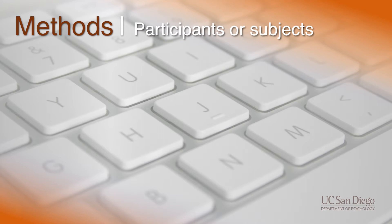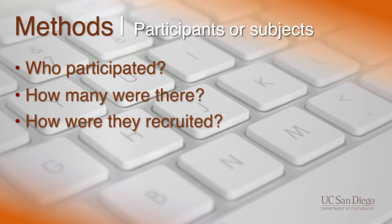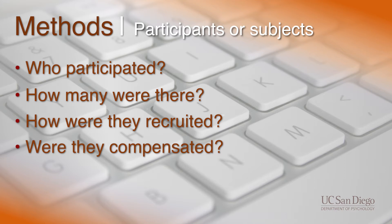Number one: participants or subjects. Who participated in your study? Were they college students, young children, or older adults? How many were there? How were they recruited? And did they receive anything in return for their participation? And do you have any demographic information? The key here is to completely describe your sample.